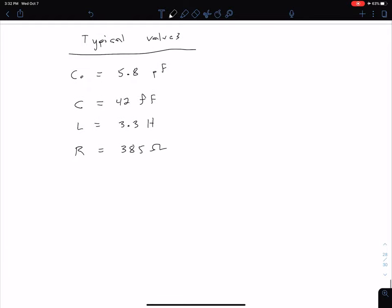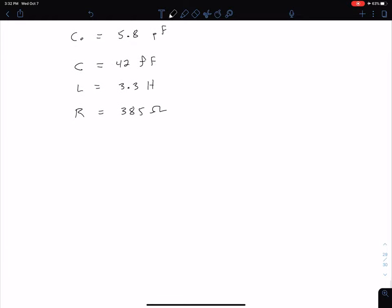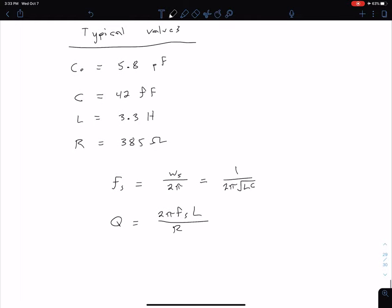With those values, we can calculate our general series resonant frequency, and that is given by omega S over 2 pi, where our omega S is 1 over root LC. So we have 1 over 2 pi square root of LC, since we just have a simple series RLC circuit. Our Q, our quality factor, is given by 2 pi Fs times L divided by R.